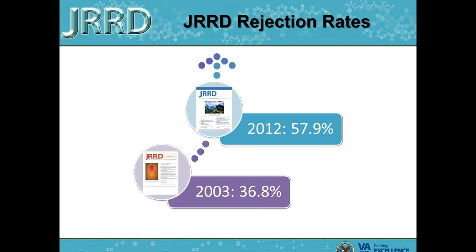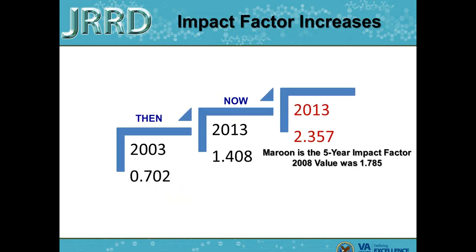Our rejection rates have also continued to climb, though they are somewhat variable depending on the timeframe from whence they were calculated. For 2012 and 2003 — the first year JRRD was in Manuscript Central — these are calendar year figures including all submissions, even revisions. Our rejection rate has practically doubled within a decade. We are rapidly approaching 60% rejection.